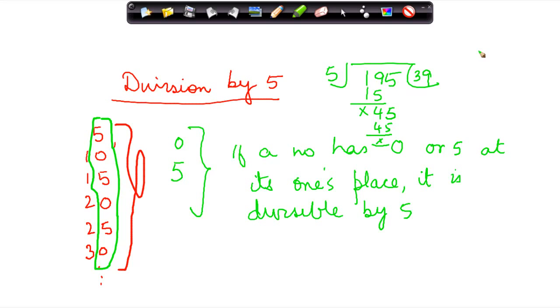Similarly, you can try this out for as many numbers as you want and the result will always be the same: if a number has 0 or 5 at its ones place, it is divisible by 5.